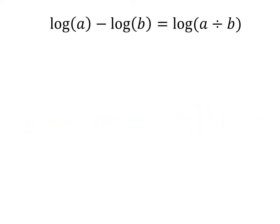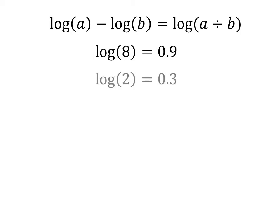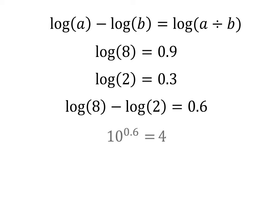Division is accomplished by subtracting logarithms. In order to divide 8 by 2, we start by calculating the logarithm of 8, which is about 0.9. Then we calculate the logarithm of 2, which is about 0.3. The difference between 0.9 and 0.3 is 0.6. Finally, we take 10 raised to the power of 0.6 to arrive at our quotient: 4.